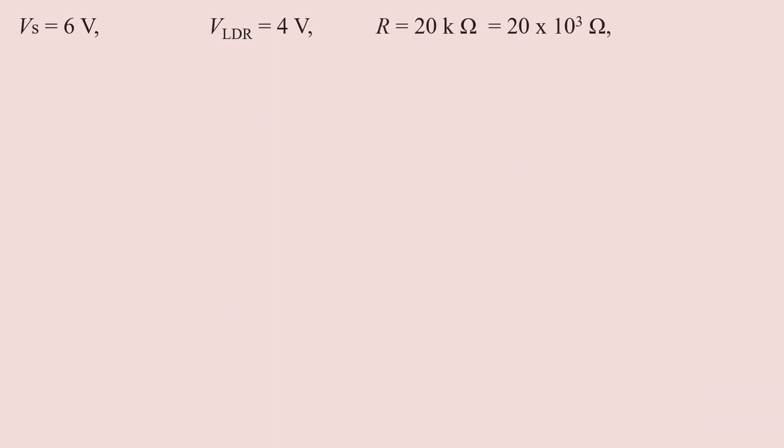The fixed resistor R is equal to 20 kilohms, which is 20 into 10 to the power 3 ohms. The LDR and fixed resistor are connected in series. The potential difference across the supply VS is equal to VR plus VLDR. Therefore, VR equals VS minus VLDR.